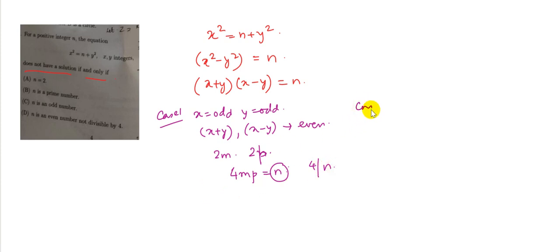Case 2, if x is odd and y is even, then x plus y is odd and x minus y is also odd. So that means x plus y would be of the form 2m plus 1, x minus y would be of the form 2p plus 1. So that means n would be odd.